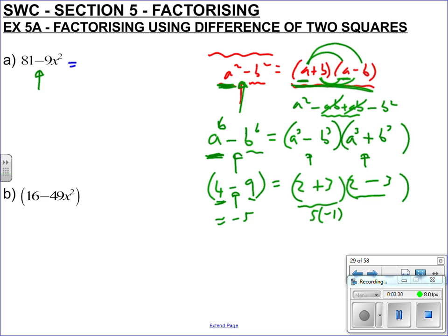So let's start doing this then. 81 minus 9x squared can be factorized into difference of two squares form. So plus and minus straight away. 81 square root of it is 9 and 9, and now we need to square root 9x squared. So square root of 9 is 3, 3, and the square root of x squared is x. So there we go, difference of two squares, done.